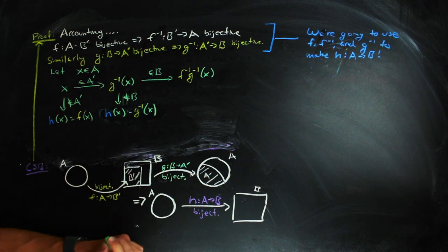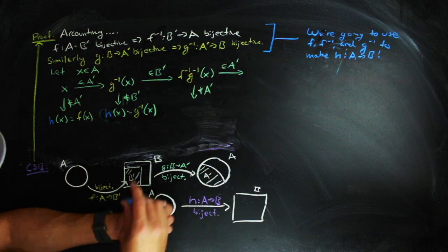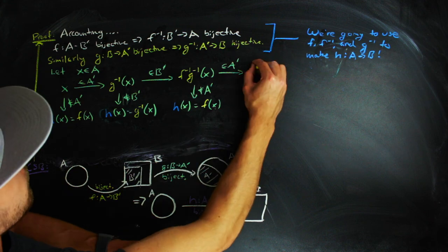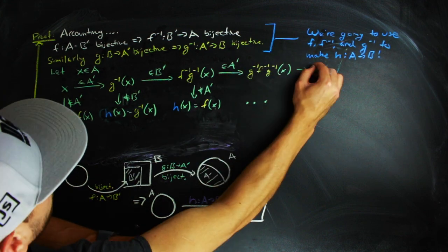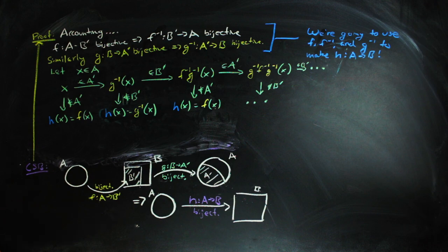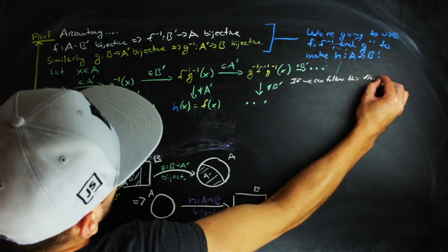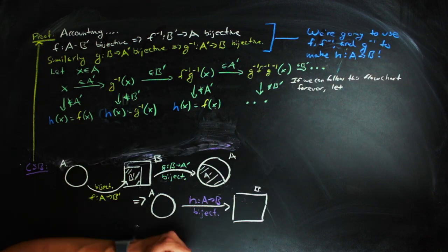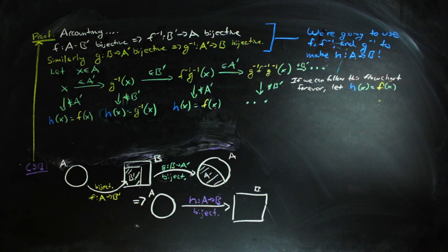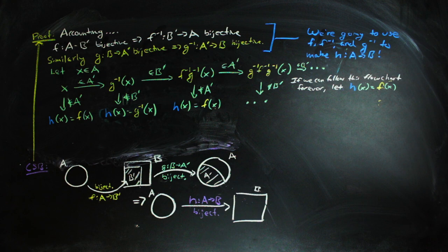If it is, we can track it back into A using F inverse. Here again, we see if F inverse of G inverse of X is in A' or not, and then proceed accordingly. This flowchart defines how we determine what H does to an element of A. And in the case when we can go infinitely down the flowchart, we define H of X as equal to F of X.